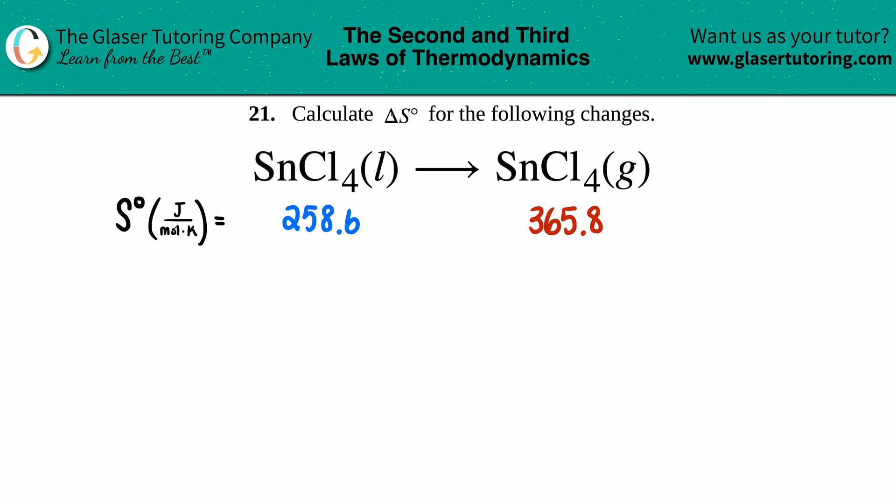Number 21: Calculate the ΔS° for the following changes. We have SnCl₄ liquid converts into SnCl₄ gas. Now we want to find the ΔS° value, where the degree symbol means we're under standard conditions. We're trying to find the standard entropy change of this equation.